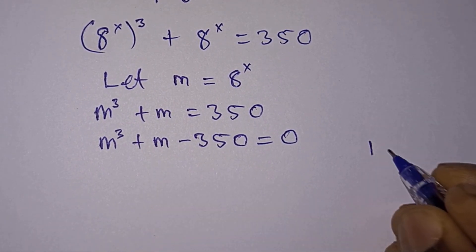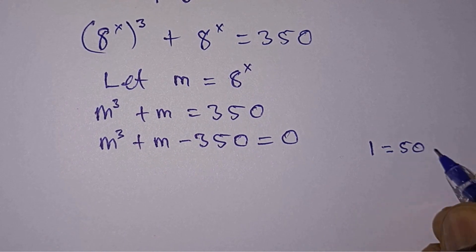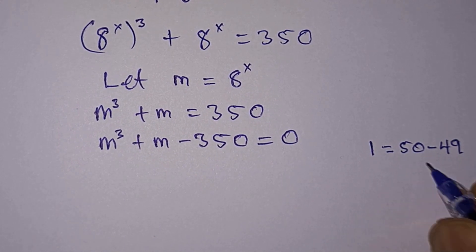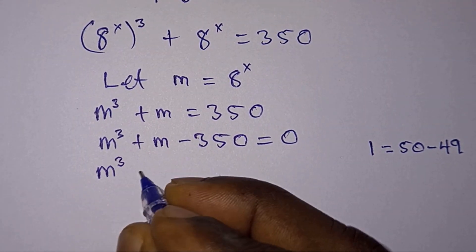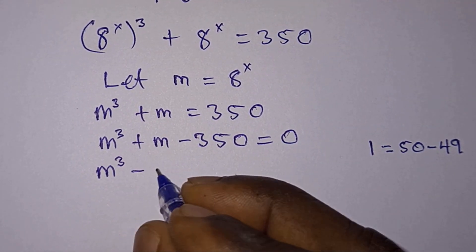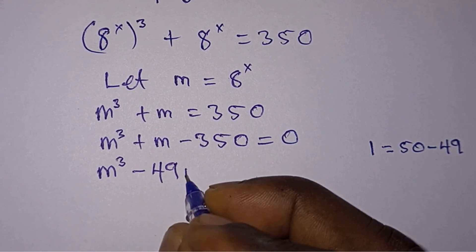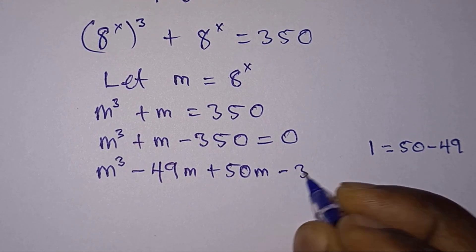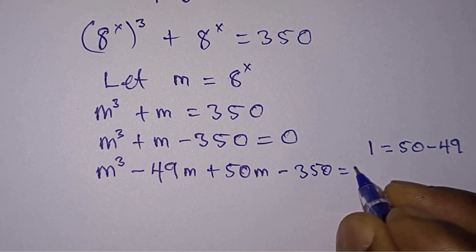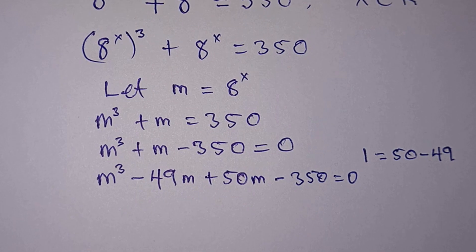Let's write this m, because the coefficient is 1, so we can write 1 as 50 minus 49. So let's plug this into the equation. So you have m to the third power minus 49m plus 50m minus 350 is equal to 0.